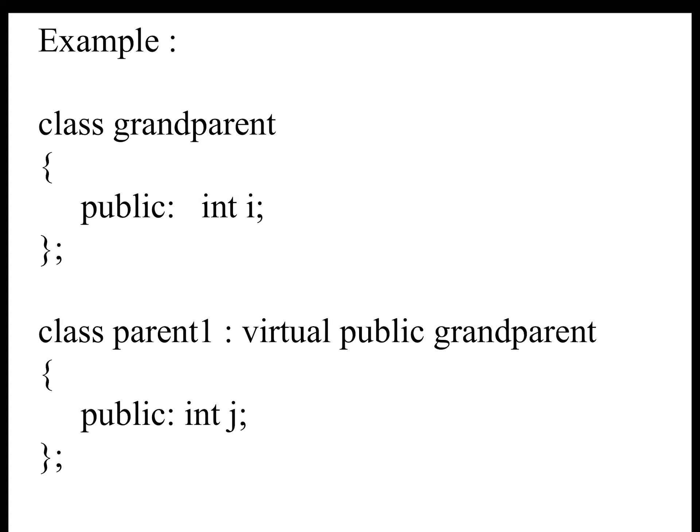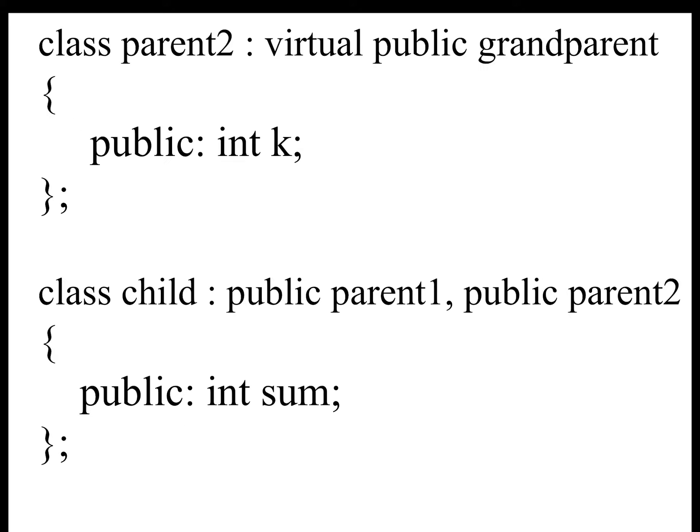Here is the example. Class Grandparent has integer i declared. Class Parent1 inherits Virtual Public Grandparent and has integer j. Class Parent2 inherits Virtual Public Grandparent and has integer k. Class Child is a derived class inheriting Public Parent1 and Public Parent2. Finally, it displays the sum.